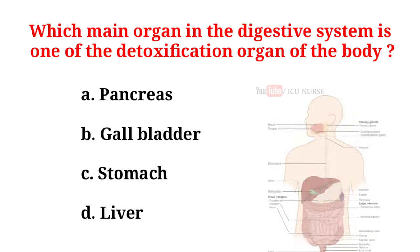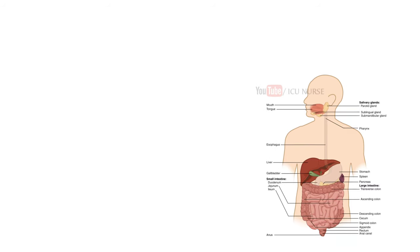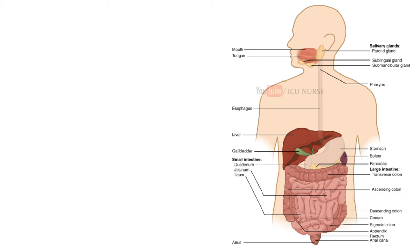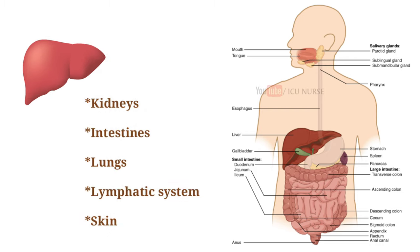Which main organ in the digestive system is one of the detoxification organs of the body? A. Pancreas. B. Gallbladder. C. Stomach. D. Liver. And the correct answer is D. Liver. Detoxification means cleansing the blood. This is done by removing impurities from the blood in the liver, where toxins are processed for elimination. The body also eliminates toxins through the kidneys, intestines, lungs, lymphatic system, and skin.